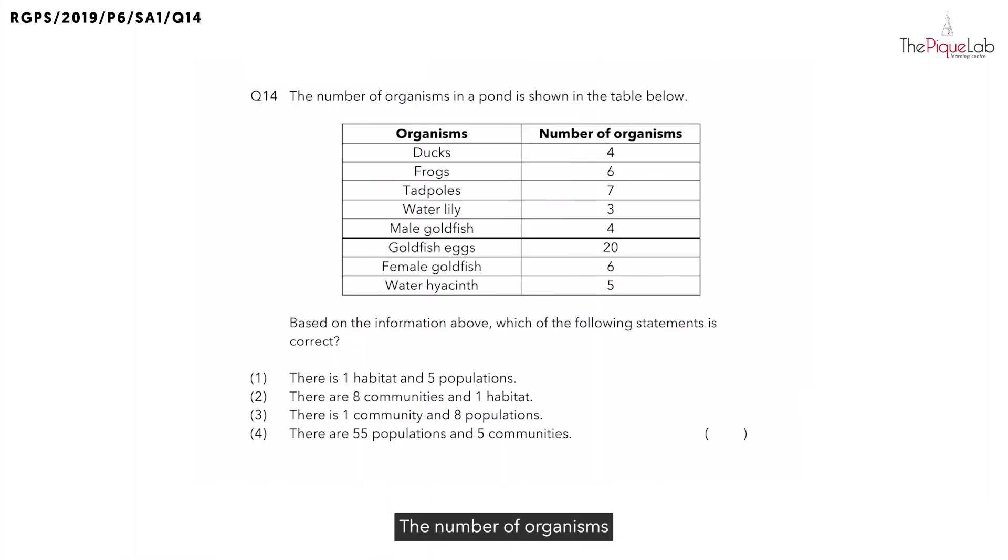Question 14. The number of organisms in a pond is shown in the table below. We are supposed to look for statements which are correct. And if we do a quick scan of the statements, we are basically supposed to determine how many habitat, populations and communities there are in the pond.